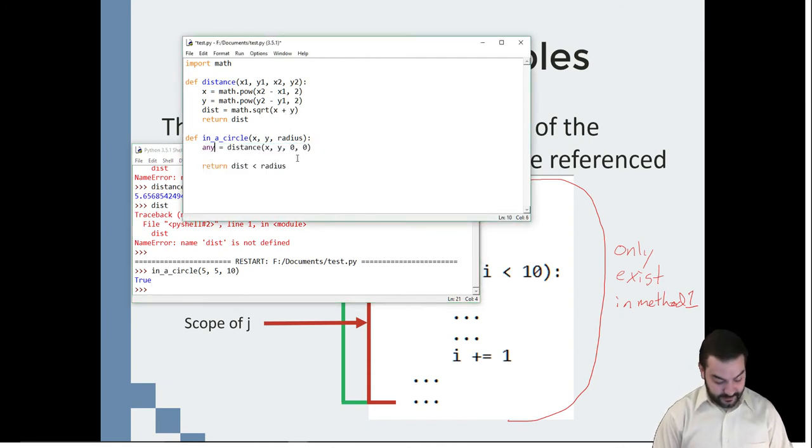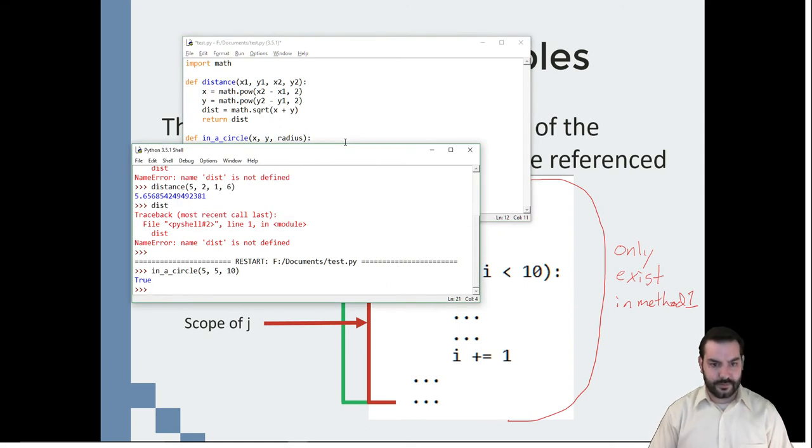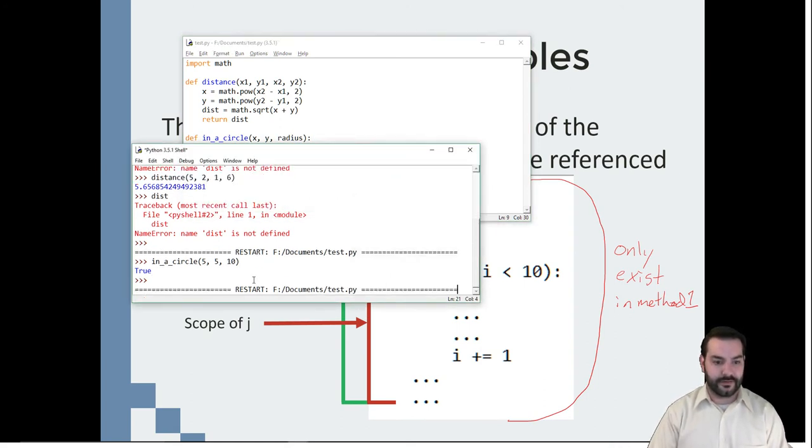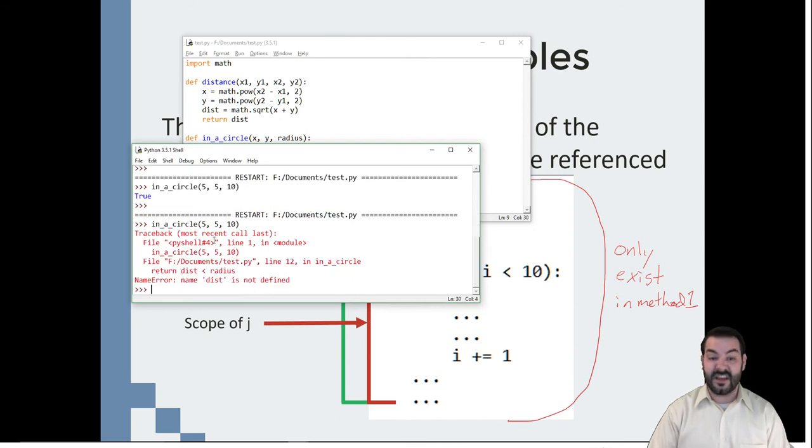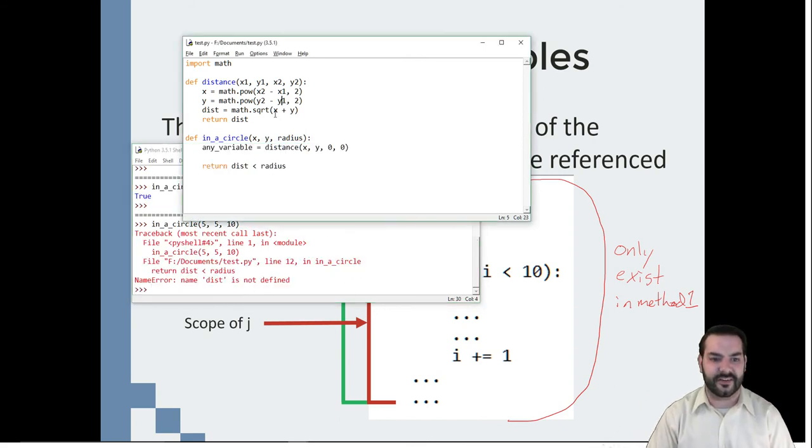But I don't have to say distance. I could say any variable. And as long as I make a reference, I'm going to leave that as dist there. We run our code. Yes. Again, you see the error. Dist doesn't exist. Dist only exists here.